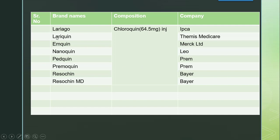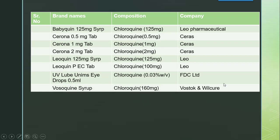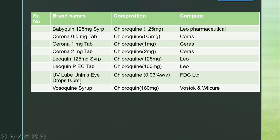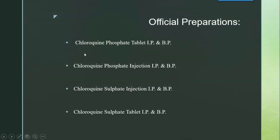Again the same brands appear such as Lariago, Lariqueen, Mqueen, Nanoqueen, Rosochine. There are also mixed-strength formulations at 125 mg, 1 mg, 2 mg, and 0.5 mg. Notably, UV Leobunium's eye drops 0.5 ml contains chloroquine at 0.03% weight by volume (0.03 grams per 100 ml), manufactured by FDC Limited. The remaining dosage forms include common tablets, syrups, injectables, etc.